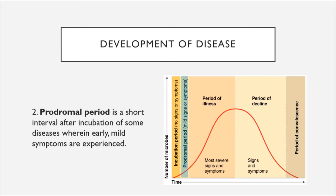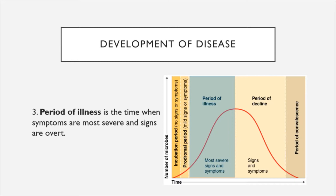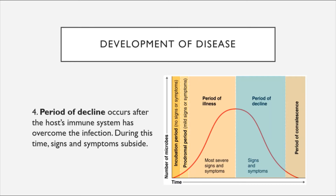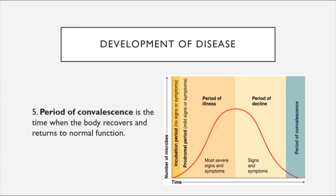The prodromal period does not come with all diseases because sometimes it is so short it is poorly defined. However, for something like the common cold, if you feel a sore throat coming on before experiencing the full-blown effects of a fever and runny nose, that initial sore throat might be considered part of the prodromal period. Next comes the period of illness, when symptoms are most severe and signs are overt. Once the immune system overcomes this, the illness enters the period of decline, when signs and symptoms subside. Finally, the period of convalescence is when the body recovers and returns to normal function.